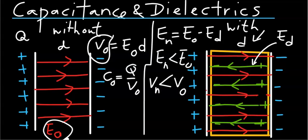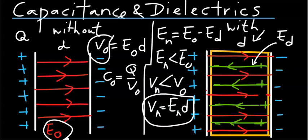The reason is, potential difference is related to the electric field by that equation. Now if the electric field is less, the potential difference across the new capacitor — namely the capacitor with dielectrics — must also be less than the original capacitor with vacuum in between the plates.